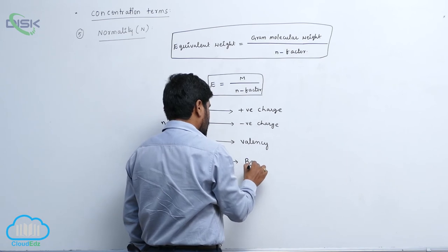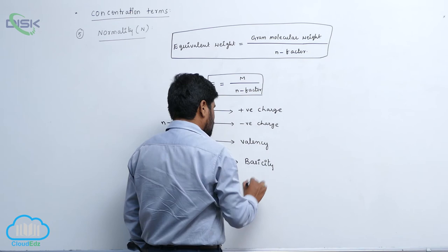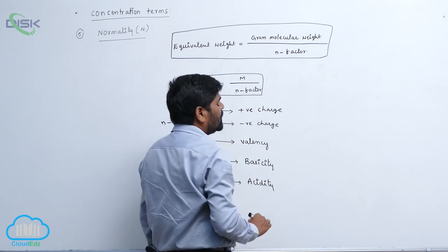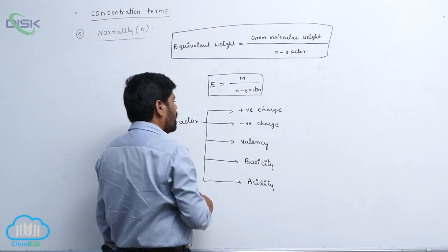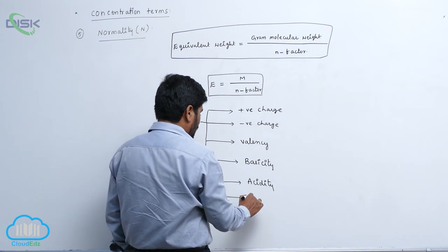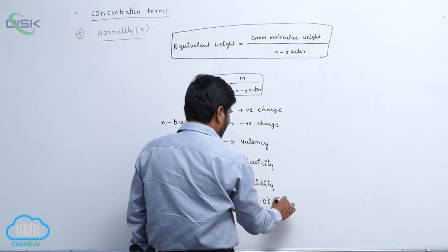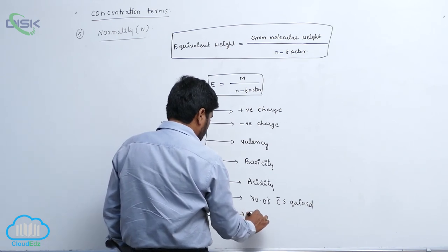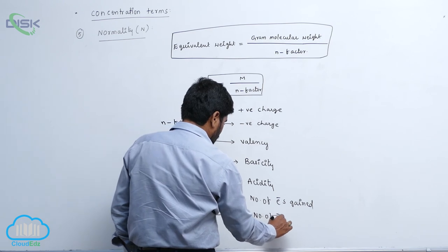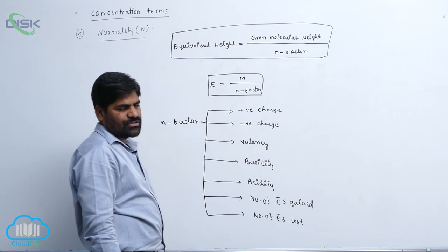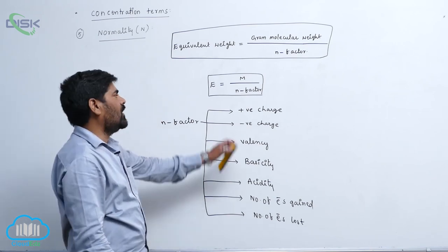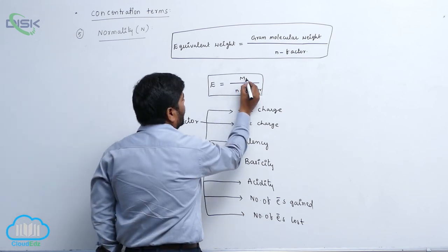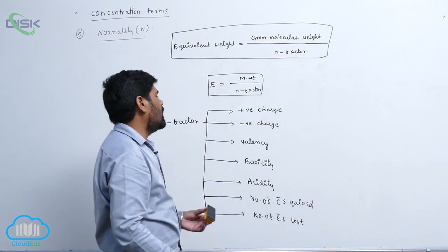The n factor can also be basicity or acidity, the number of electrons gained, or the number of electrons lost. So this always gives the n factor. Therefore, equivalent weight equals molecular weight divided by the n factor.